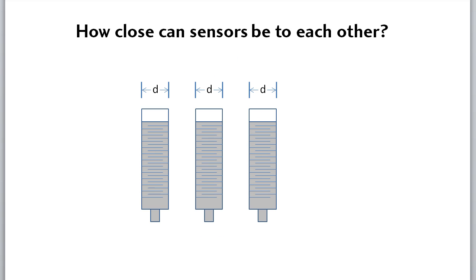When placing sensors side by side, a good rule of thumb is to leave at least one sensor diameter of space between them so they don't interfere with each other.